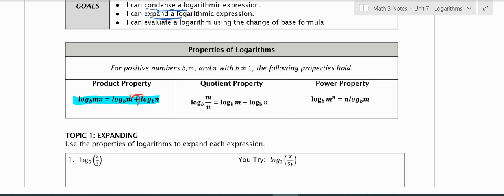The second one is the quotient property. If I'm dividing two values with base b, I could do that as just subtraction. So log base b of m minus log base b of n. That would be a way I can rewrite the division or vice versa if I wanted to condense.